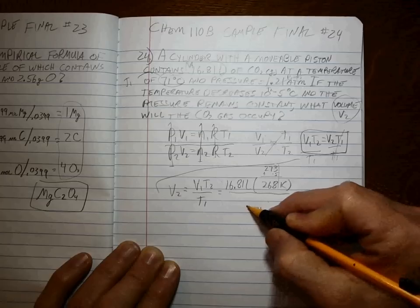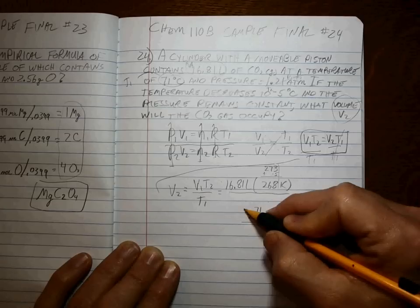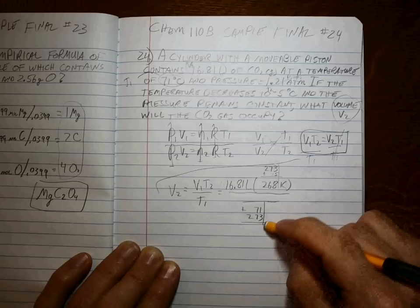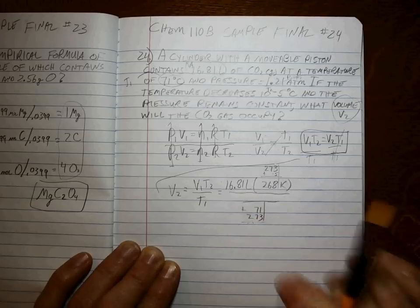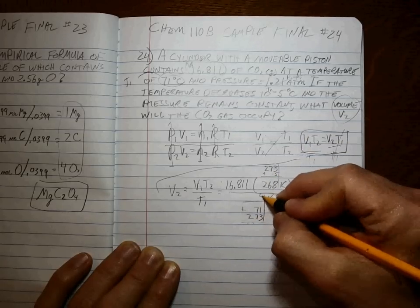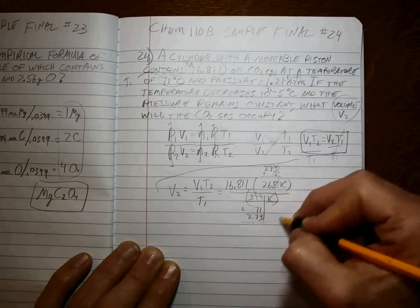And what's T1? That's 71 plus 273. I think it's going to add upside down to get, in Kelvin, 344 K.